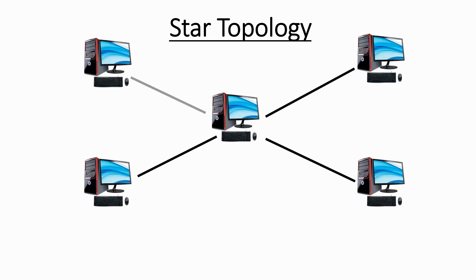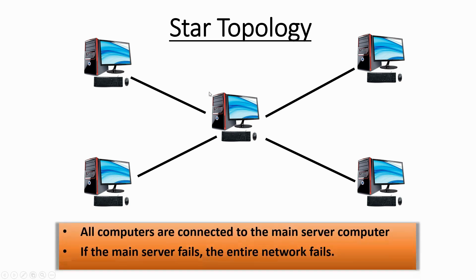Now let's move to star topology. As it sounds, it forms a star-like structure. All computers are connected to one main server computer. That server machine provides services to all the other client machines, the nodes. There is a point-to-point connection between the server and each individual computer.